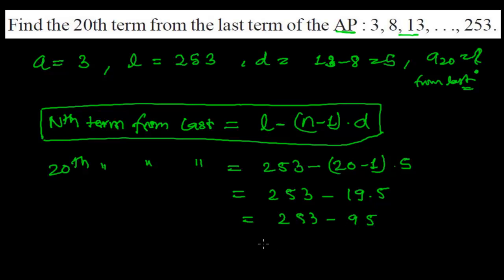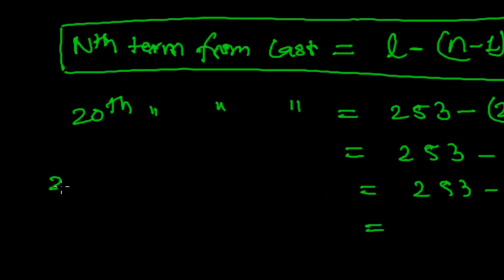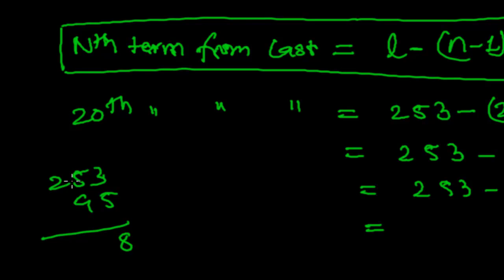19 times 5 is 95. So it is 253 minus 95, which equals 158. Let me subtract here — it will be 158. So the 20th term from the last is 158.